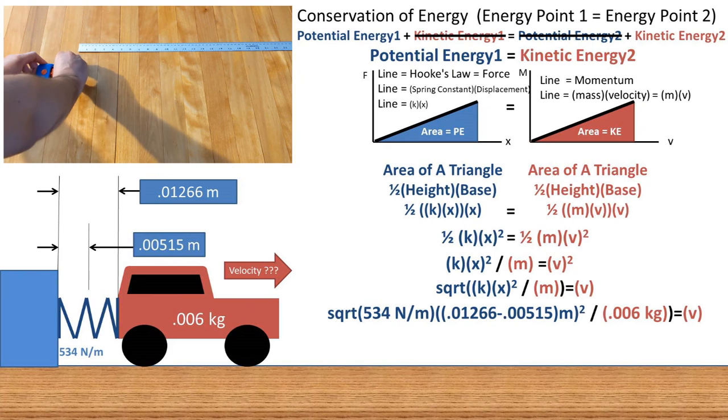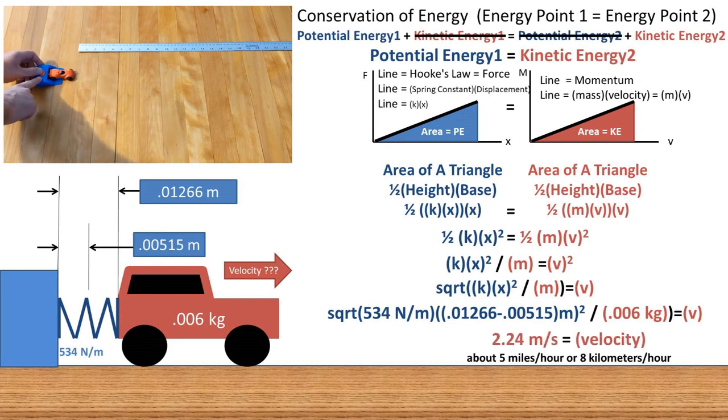Plugging in all of our values and pressing enter on our calculator, we get a velocity of 2.24 meters per second, which is about 5 miles per hour or about 8 kilometers per hour.